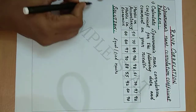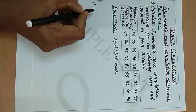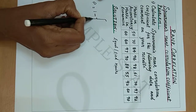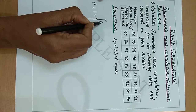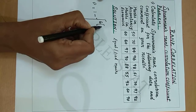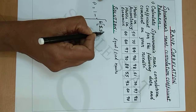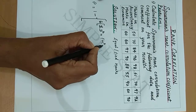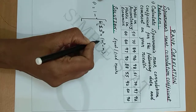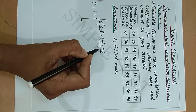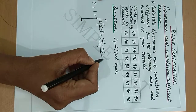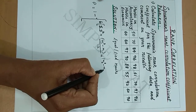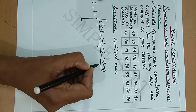The formula for Spearman's rank correlation coefficient under tied ranks is: rs = 1 minus 6 times the quantity [summation D² plus (M1³ − M1)/12 plus (M2³ − M2)/12], divided by N(N² − 1).